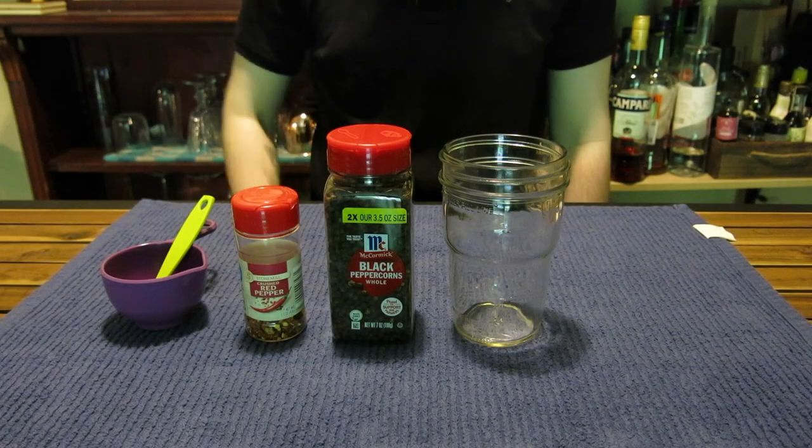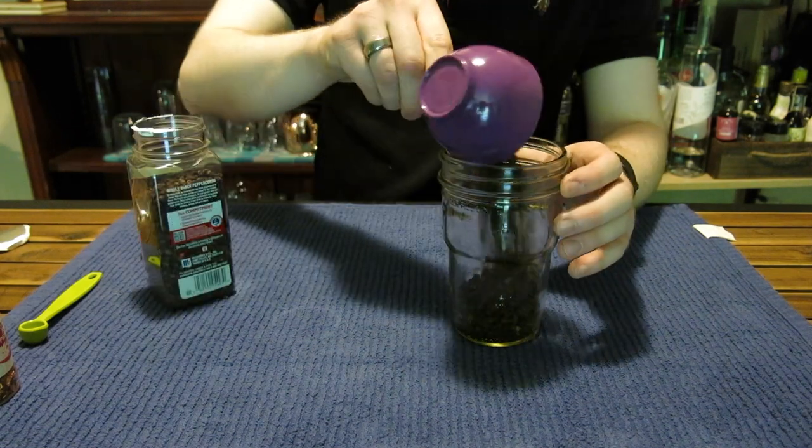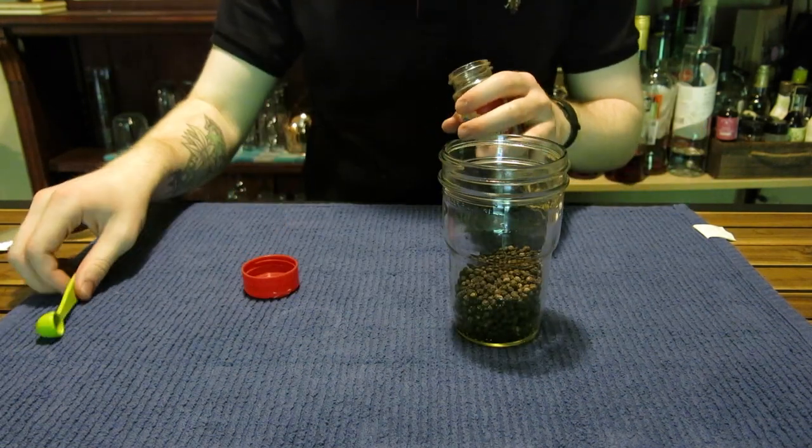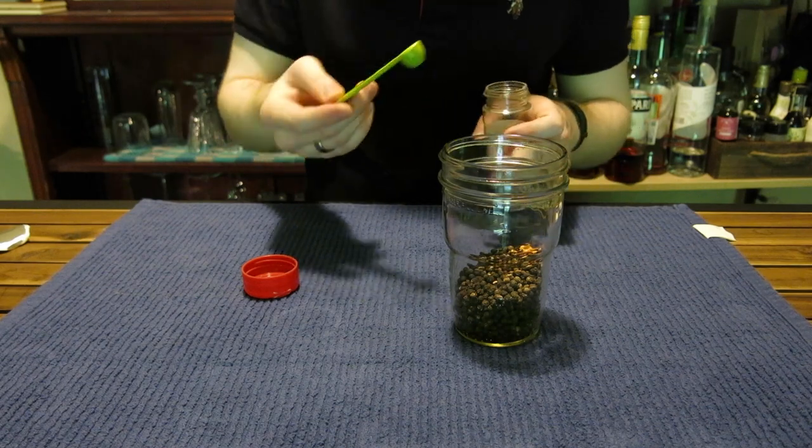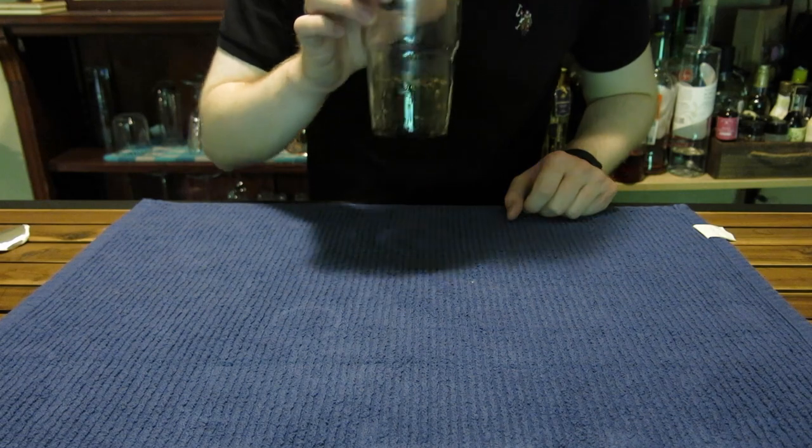Now, with the scientific tangent out of the way, let's make some extract. Into a reasonably sized mason jar, I'm going to combine half a cup of whole black peppercorns and an eighth a teaspoon of crushed red pepper. That may seem like not a lot of red pepper, and it isn't, but it's more than enough. This stuff is very potent, especially when it's dried like this.